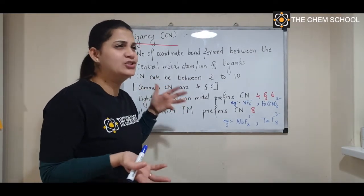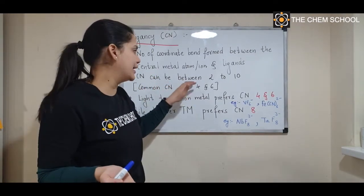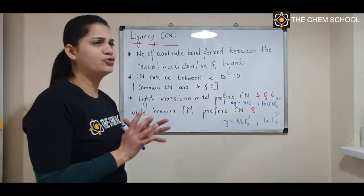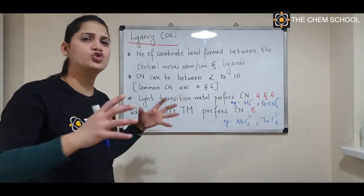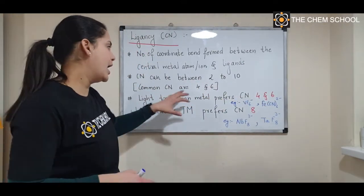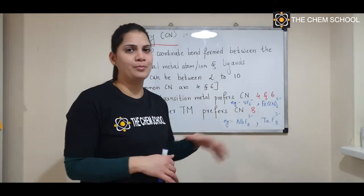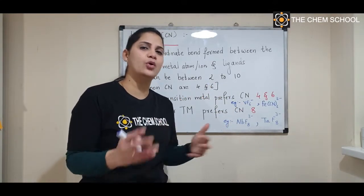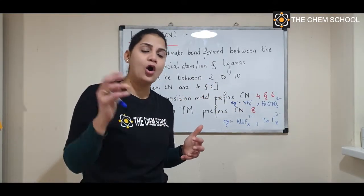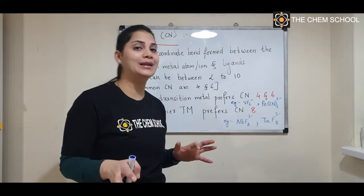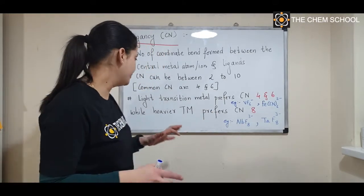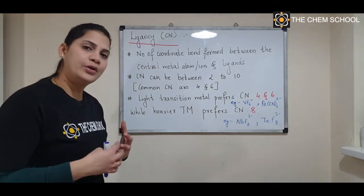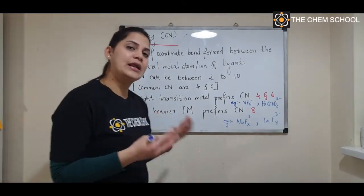In general, the coordination number lies between 2 to 10. Among those, the most common ones are coordination numbers of 4 and 6. Many complexes you will find with a coordination number of 4 and 6 for the central metal atom.